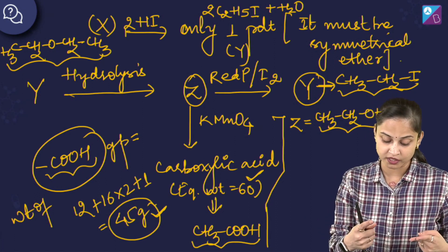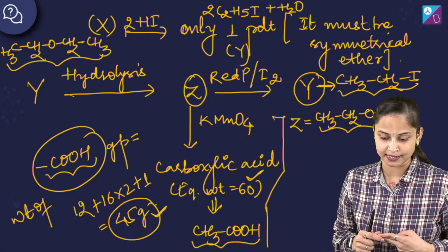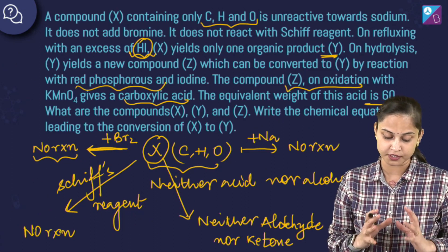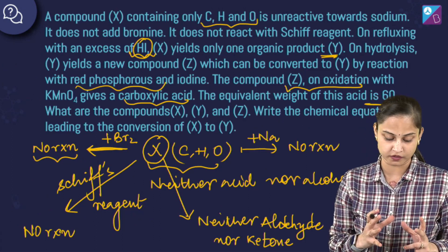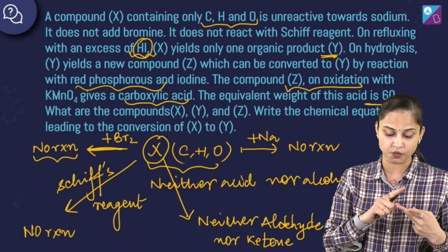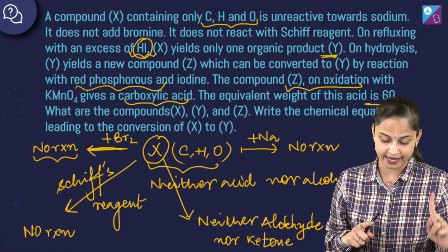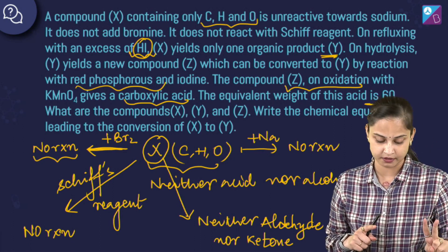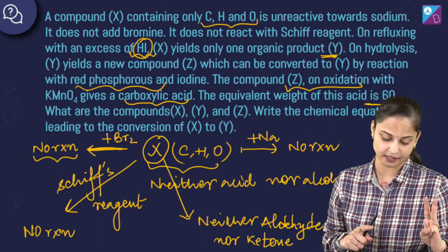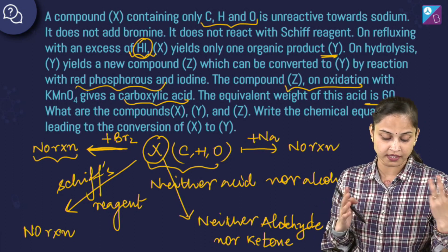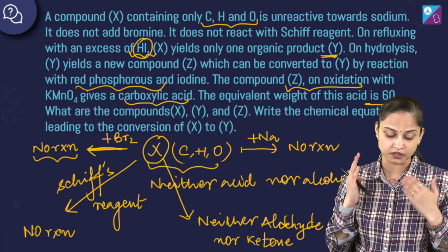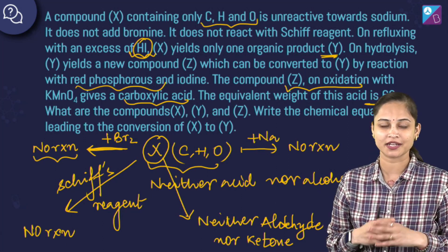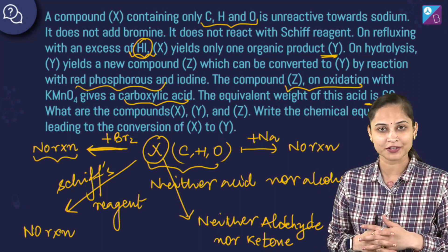So to summarize: X is diethyl ether, Y is ethyl iodide, and Z is ethanol. Ethanol undergoes oxidation with KMnO4 to give acetic acid. This is how we identified compounds X, Y and Z and wrote the chemical equations for the conversion of X to Y. Hope you understood this question. Thank you so much.